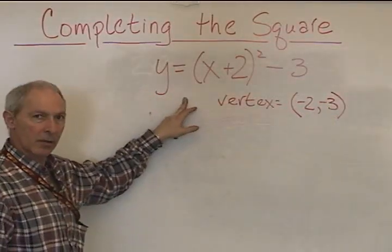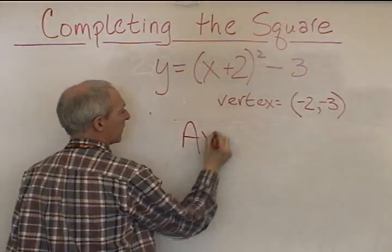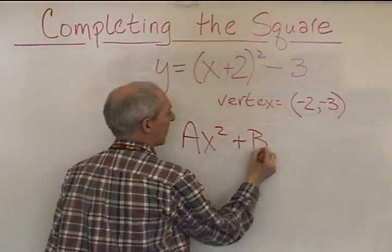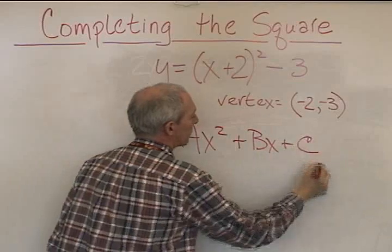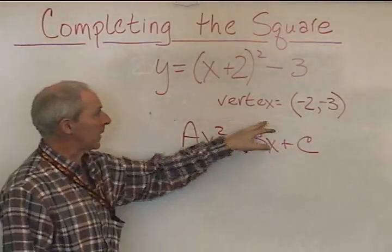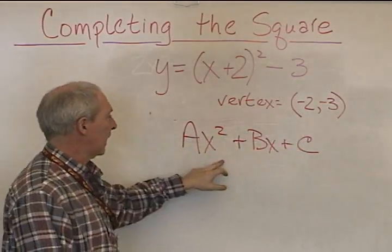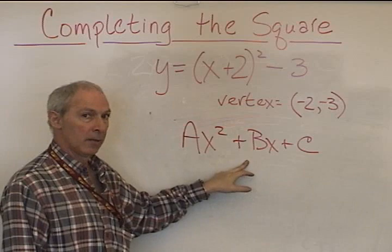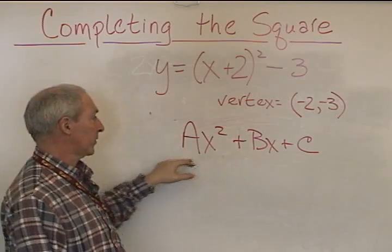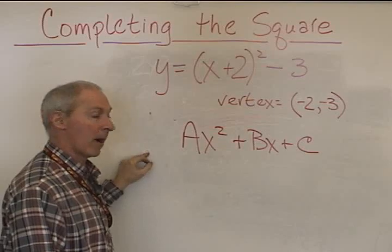But if we have this equation expressed in standard form, and the standard form looks like this, ax squared plus bx plus c, we'll have some information about the parabola, but we won't be able to easily get the vertex. I showed you how to get it from this standard form, but completing the square allows us to go back and forth between these two forms of a parabola.